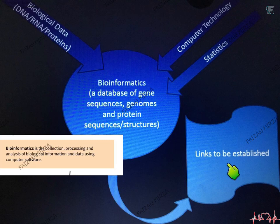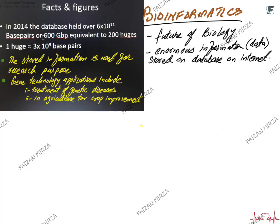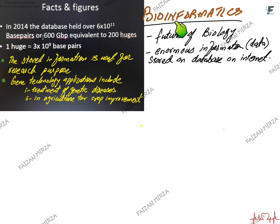Bioinformatics allows links to be established, and these links are very useful in giving out information. Bioinformatics is the future of biology, and this enormous data is stored in databases on the internet. You can't store this information in books — that would require too much paper. An encyclopedia is very thin compared to the amount of information bioinformatics generates; you would need countless books. So we place all this data in databases on the internet.